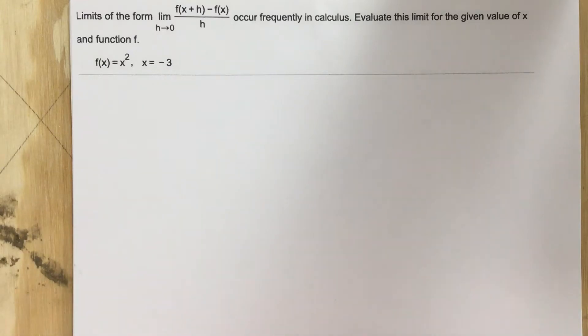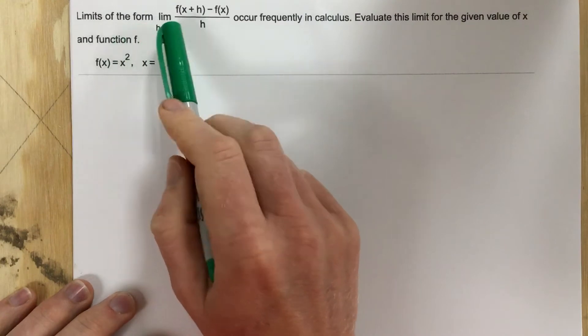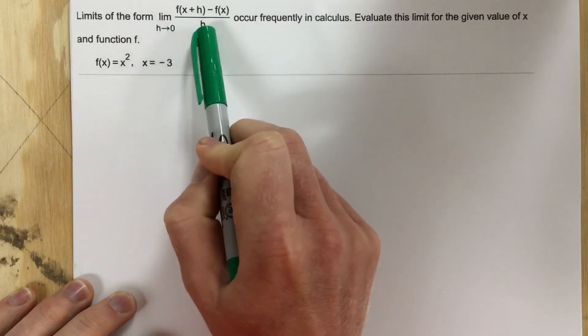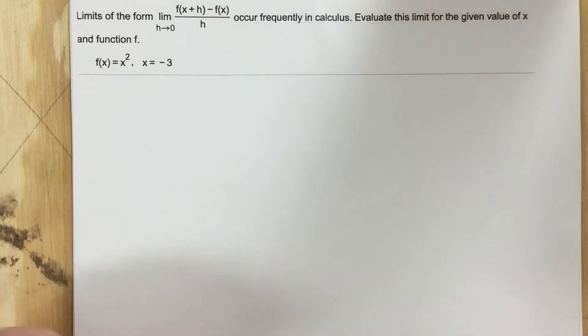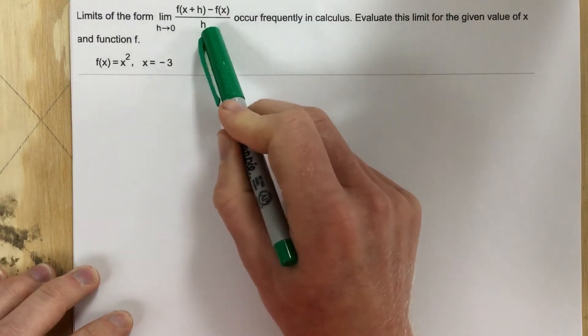This is problem number 8 for section 2.2. This problem says limits of the form limit as h approaches 0 of f of x plus h minus f of x over h occur frequently in calculus, and we've already seen these in section 2.1.